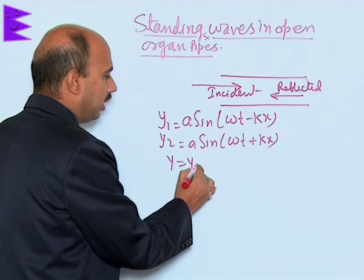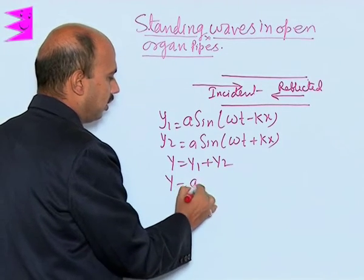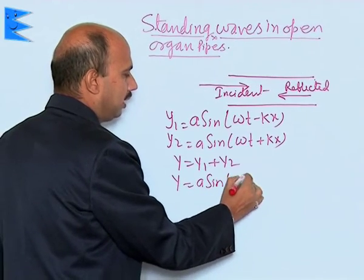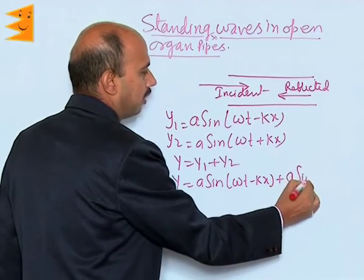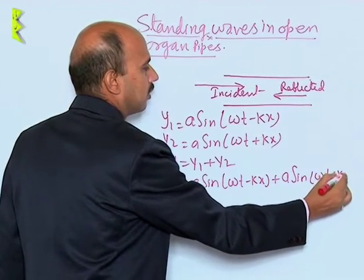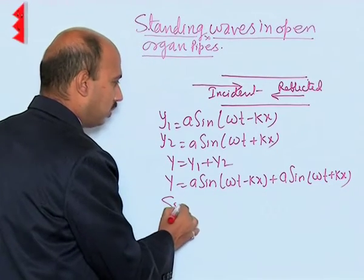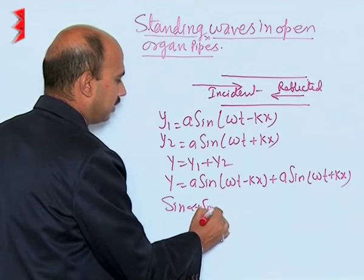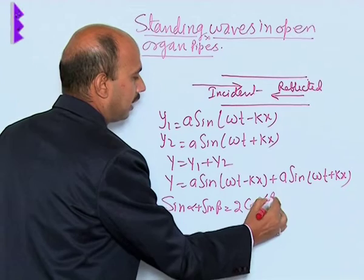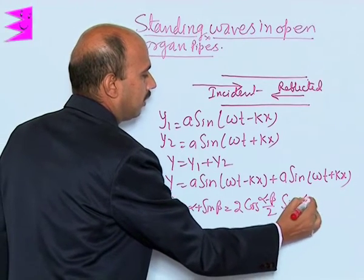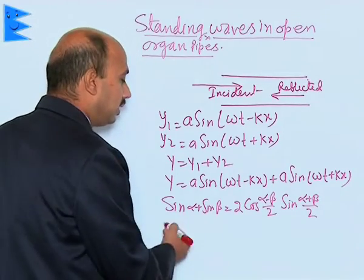According to the principle of superposition, y equals y₁ plus y₂, so we can write a sin(ωt - kx) plus a sin(ωt + kx). Now we can use the formula sin α plus sin β equals 2 cos((α-β)/2) sin((α+β)/2).